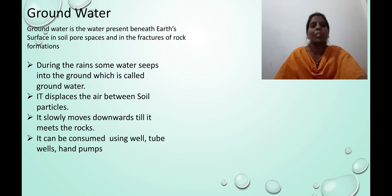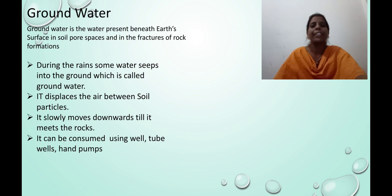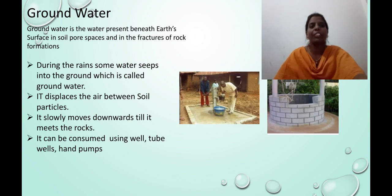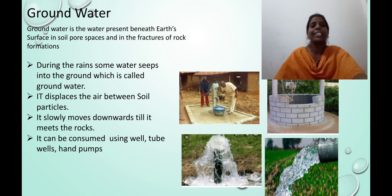Groundwater is the water present beneath the earth's surface, in soil pore spaces, and in the fractures of rock formations. During the rain, some water seeps into the ground, which is called groundwater. It displaces the air between soil particles and slowly moves downwards till it meets the rocks. It can be consumed using wells, tube wells, and hand pumps. The tree roots go underground to get underground water. Hand pumps are also used to get underground water.